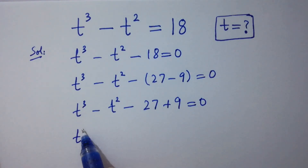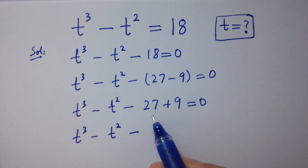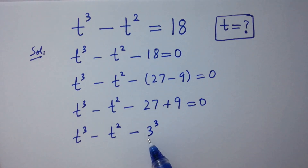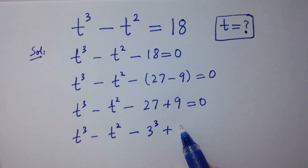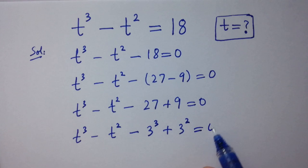So t cubed minus t squared minus 27 — here 27 is 3 cubed, since 3 times 3 is 9 and 9 times 3 is 27. And plus 9 is 3 squared, since 3 times 3 is 9. So this equals 0.